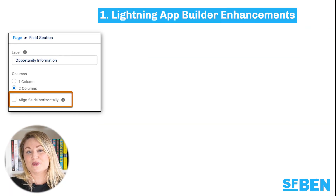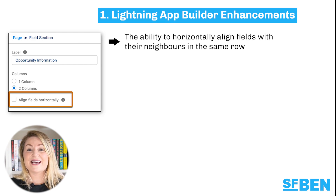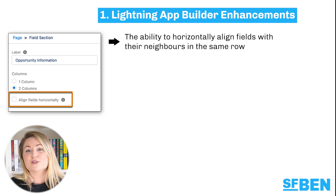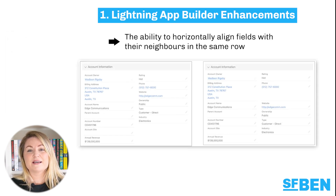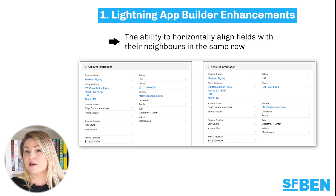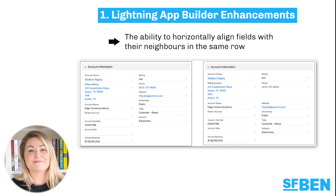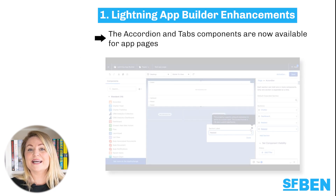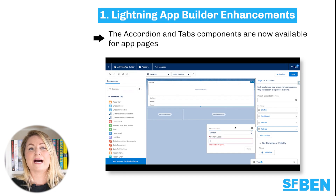Sometimes it's the smallest enhancements that make you swoon. The ability to align fields horizontally is my favorite new feature. This change horizontally aligns fields with their neighbors in the same row, improving the look of pages. In this example, the image on the left is without alignment and the image on the right is with alignment — notice the spacing and alignment of the phone field. And finally, the accordion and tabs components are now available for app pages, which can help you better organize and improve page performance.